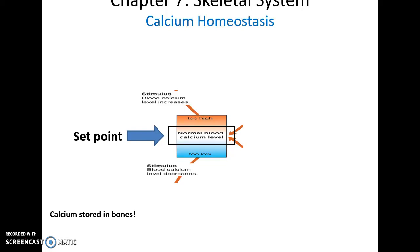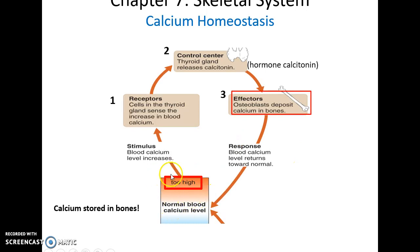Calcium homeostasis: bones are important in regulating the amount of calcium in our blood, which needs to be at a very specific set point. Should calcium levels in the blood get too high, this triggers receptors in the thyroid gland, causing the thyroid to secrete the hormone calcitonin. Calcitonin is released into the bloodstream and affects the osteoblasts, causing them to build up more organic bone matrix. As bone matrix builds up, calcium is removed from the bloodstream to calcify that tissue, eventually returning blood calcium to normal levels.